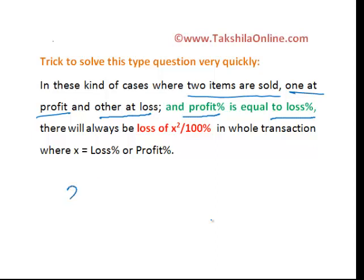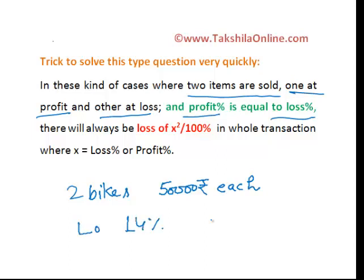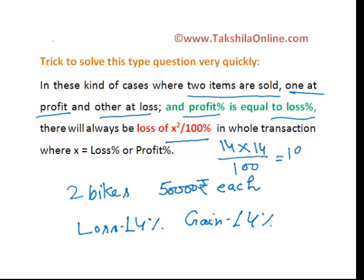In the previous case, two bikes were sold at 50,000 each — one at a loss of 14% and another at a gain of 14%. So in this transaction there will always be a loss. Rather than doing three calculations up to two decimal digits, I can simply find the loss as x² by 100. Here x equals 14, so loss equals 14 × 14 divided by 100, which is 196 by 100 — that is 1.96%. Within a fraction of a second you can find the answer.